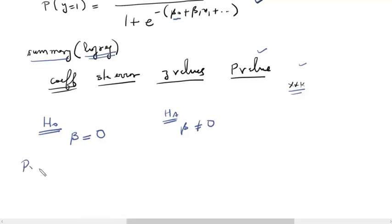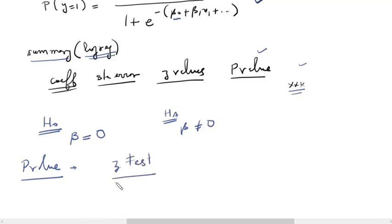Next, we find the p-values. The definition of a p-value is: we assume the null hypothesis to be true and then find the probability of getting data like we have, or more extreme in the direction of the alternative. We find the p-value in this case using a z-test. Once we perform the z-test and get the p-values, if the p-value is below 5%, we reject the null hypothesis.